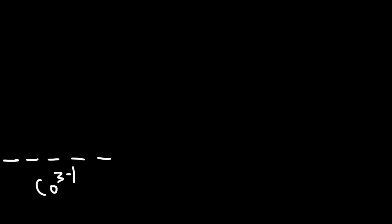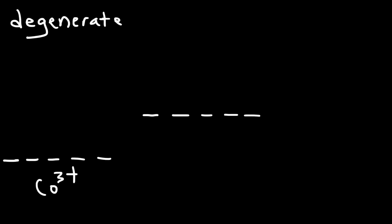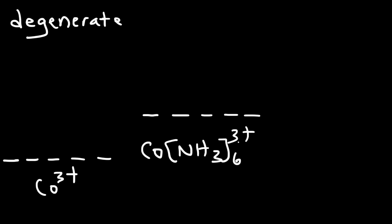Let me give you a visual illustration. These are the 3d orbitals of the free cobalt 3+ ion — they are degenerate orbitals, meaning they have the same energy and are at the same level. When the ammonia molecules approach the d orbitals, there's going to be electron-electron repulsion, and so the energy of the d orbitals will increase. This right here is a hypothetical spherical crystal field — it represents the energies if the cobalt ion were completely surrounded from all angles with ammonia. This is hypothetical.